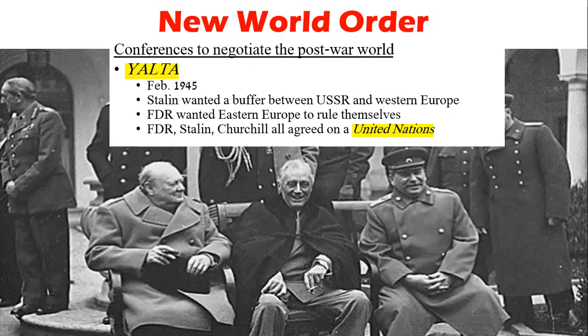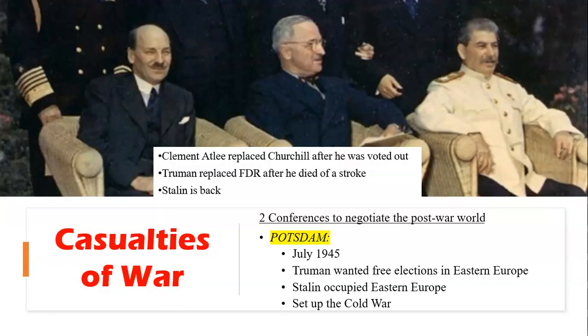FDR had wanted Eastern Europe to rule themselves; Truman wanted free elections in Eastern Europe — a slightly different ideology. Originally Truman had written to his wife that he liked Stalin, but he later became suspicious of Stalin's motives. America wanted Germany to recover and become a trading partner, but Russia did not trust Germany at all after years of fighting so closely. Russia wanted a weakened Germany and a buffer zone of friendly states around Russia. Truman was anti-communist while Stalin was anti-capitalist — this is going to set up the Cold War, which we'll go into in Unit 8.